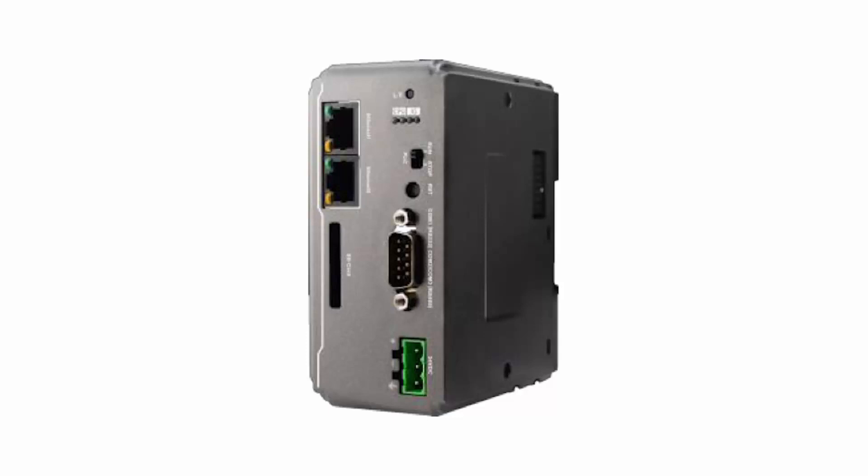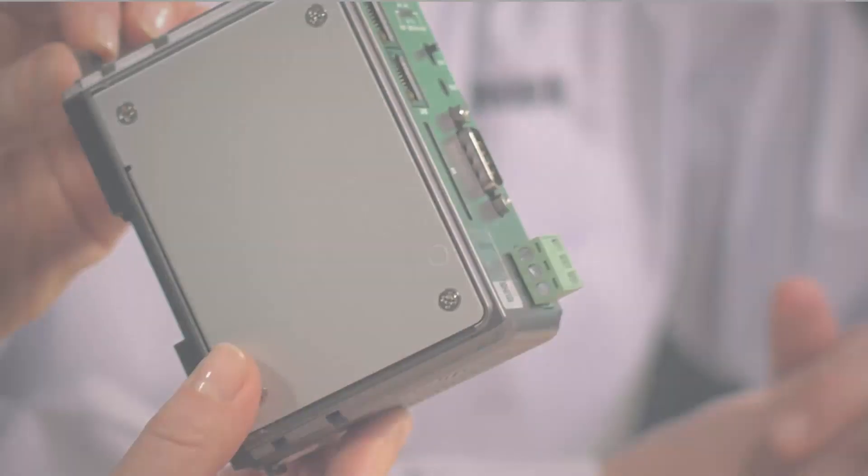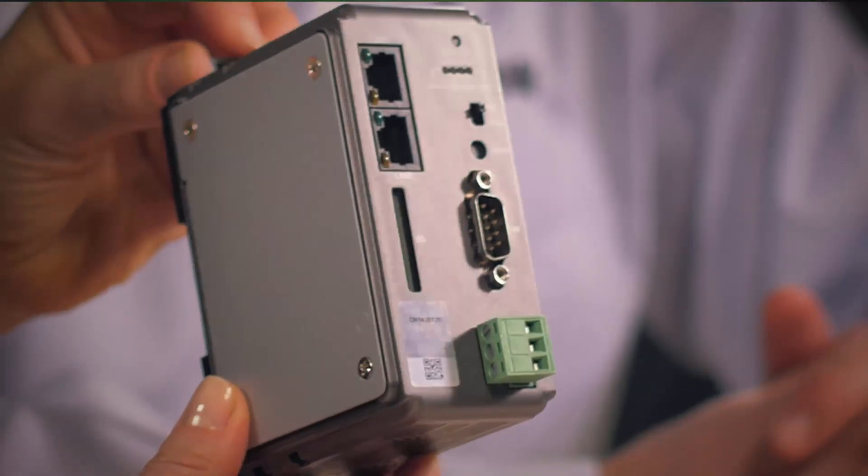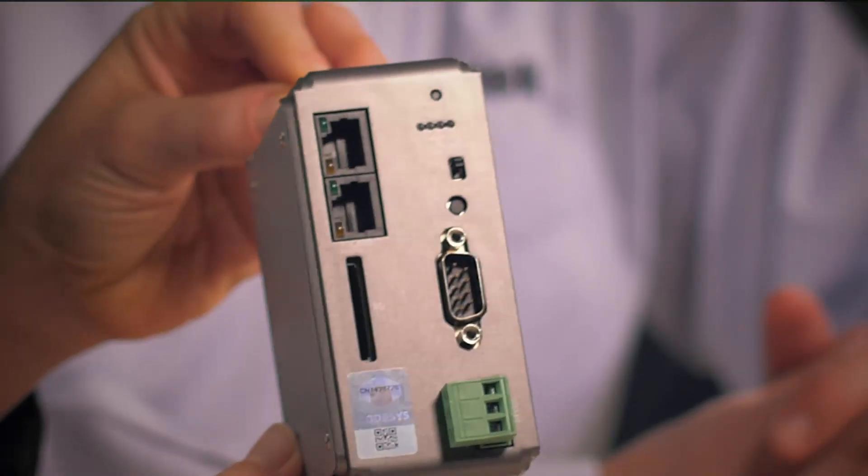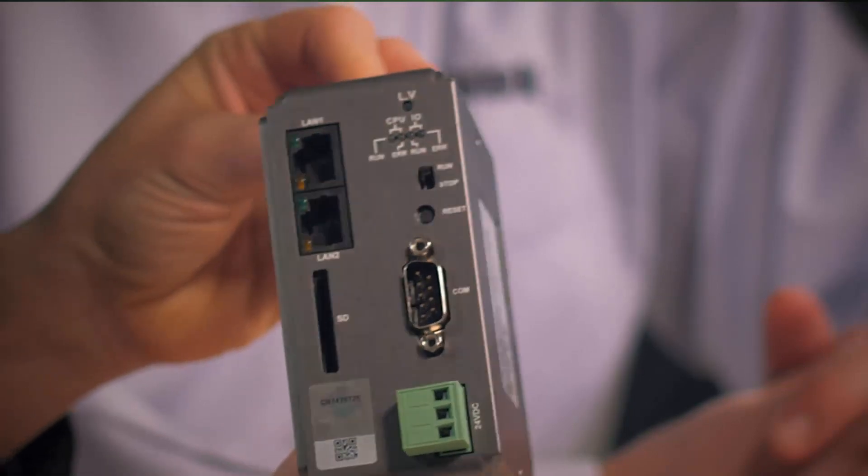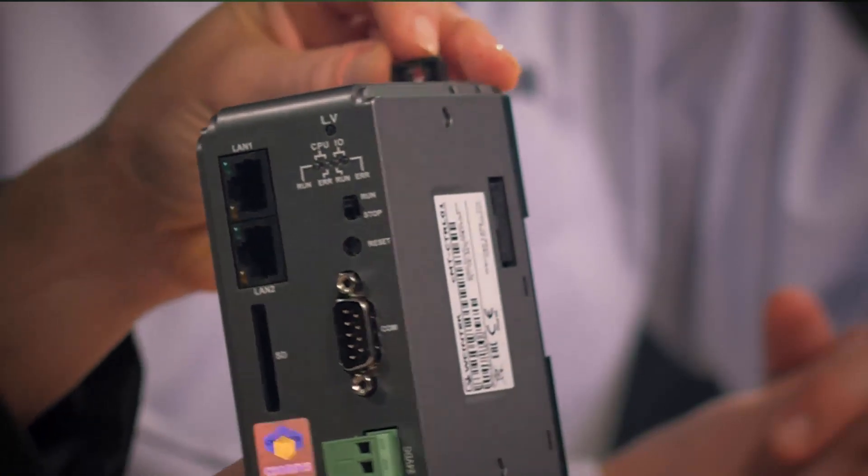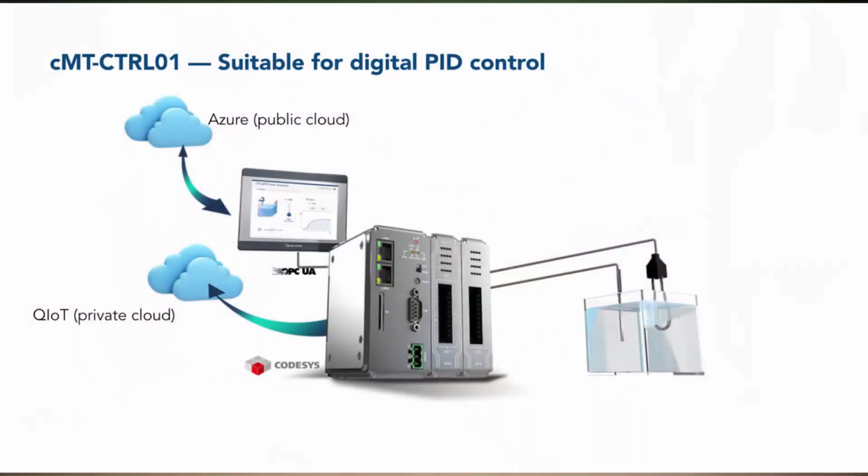The dual Ethernet ports on the CMT-CTRL-01 can be freely assigned so there's one Ethernet port for CodeSys and the other one for IIoT gateway. Or both Ethernet ports can be used for the IIoT gateway, with one port connected to the host computer or Internet, and the other connected to an on-site Ethernet-based PLC.